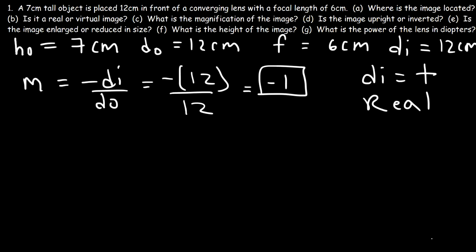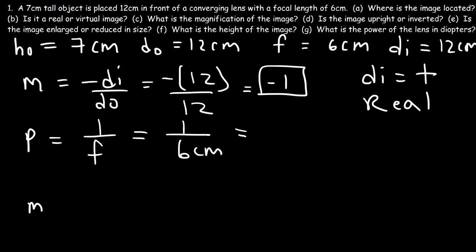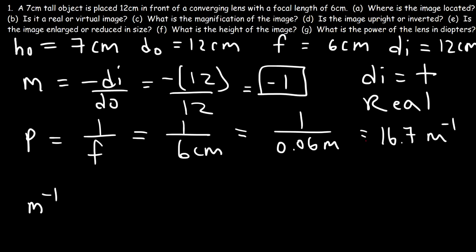What is the power of the lens in diopters? The power is 1 divided by the focal length. The focal length is 6 centimeters, but we need to convert to meters because diopters are meters to the minus 1. Dividing 6 centimeters by 100 gives 0.06 meters. So 1 divided by 0.06 is 16.7 diopters. That's the power of the lens.